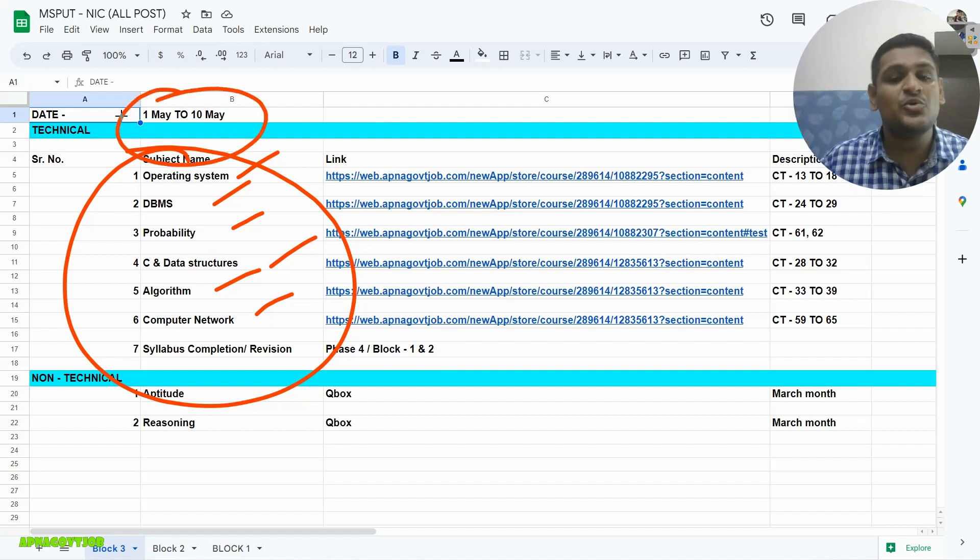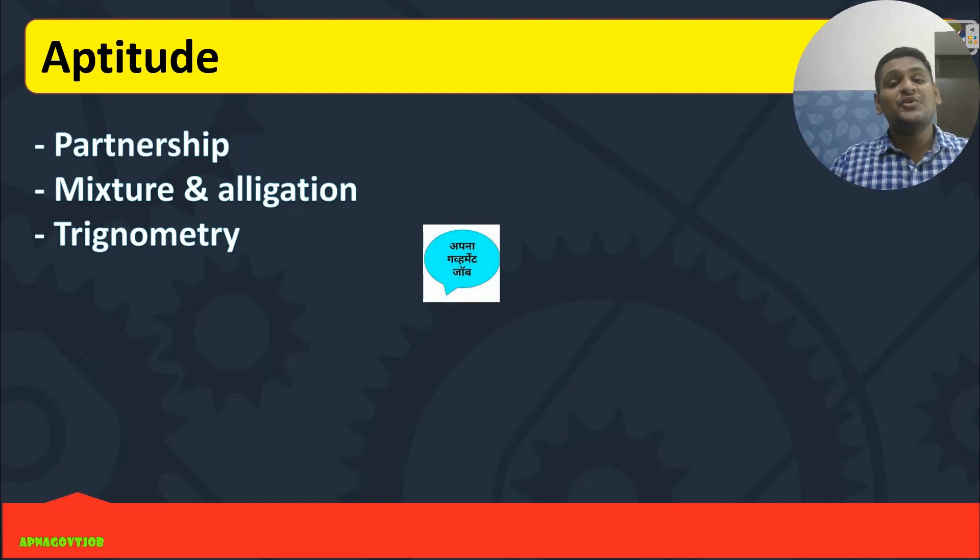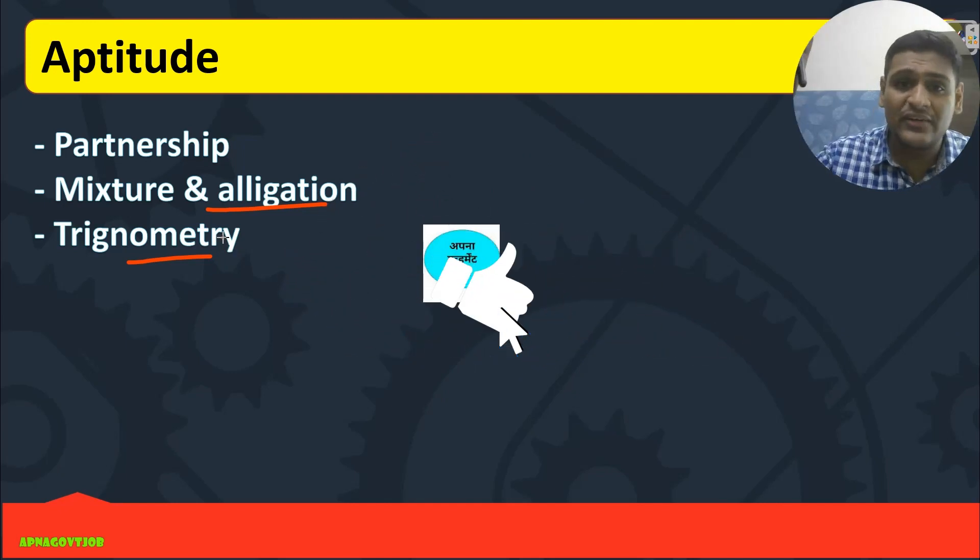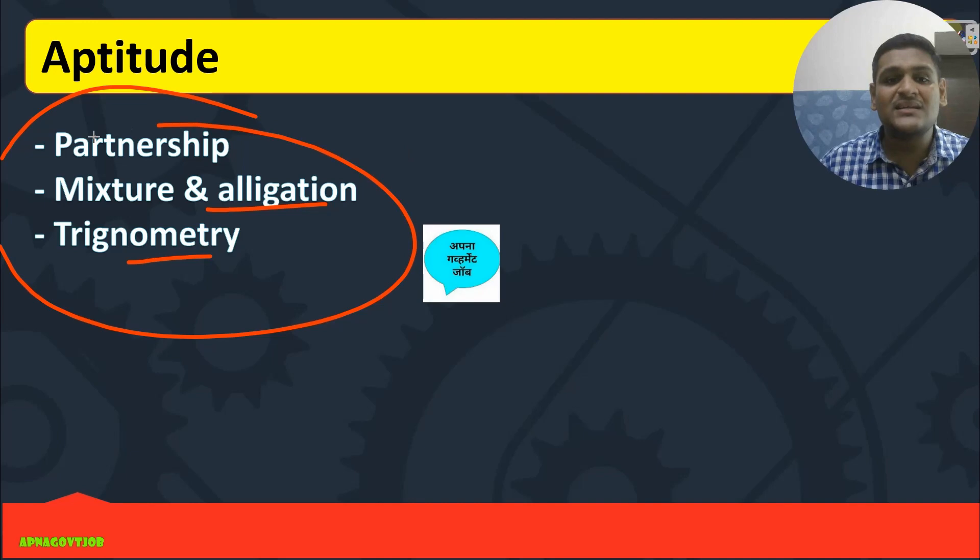Let's start with the Aptitude. First chapter we will take Partnership, then Mission Allocation, Trigonometry. Already all the guidelines I have given to you. So I will not reflect again. In Aptitude we are targeting these three chapters. Definitely complete it. Then in QBox you can solve multiple questions which is enough for your exam, NIELIT exam.